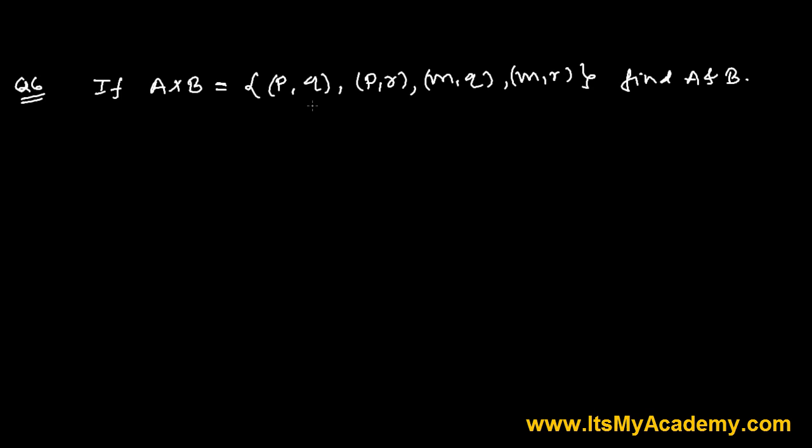We have here question 6 that is completely based on the concept of ordered pairs and Cartesian product. The question is saying if A cross B, the Cartesian product of A and B set, these are individual sets, set A and set B is (P,Q) and then (P,R) and then (M,Q) and then (M,R). And now the question is saying what is the set A and what is the set B.